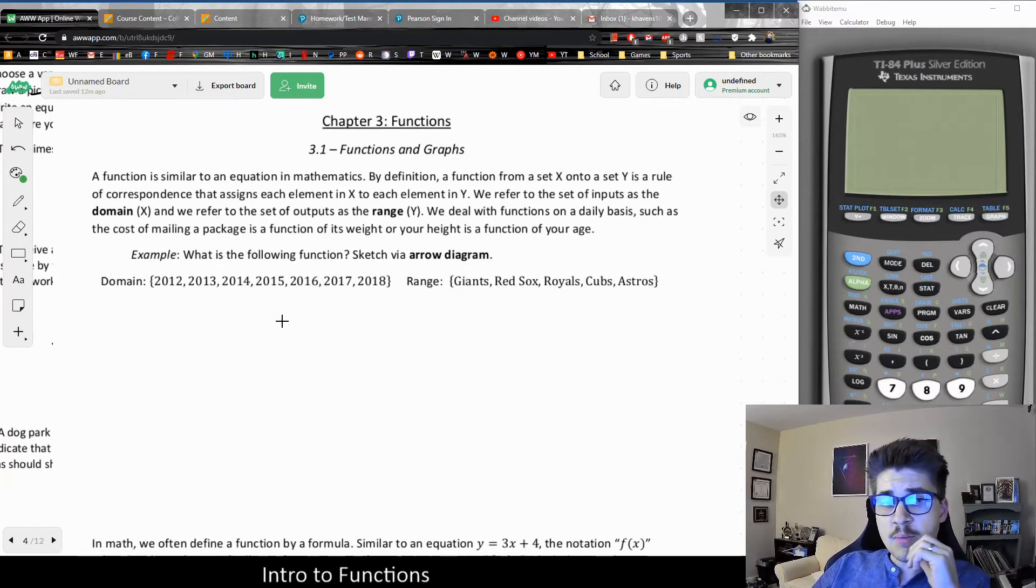It's the relationship between one group of things and another. Let's say the domain of our function is set to be 2012, 2013, 2014, 2015, and so on. And the range is set to be Giants, Red Sox, Royals, Cubs, and Astros.